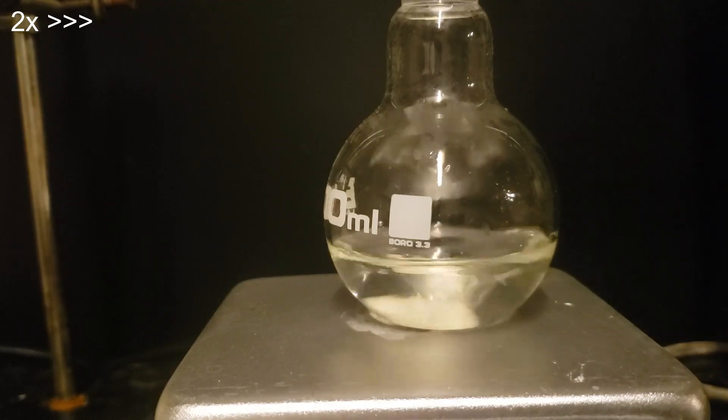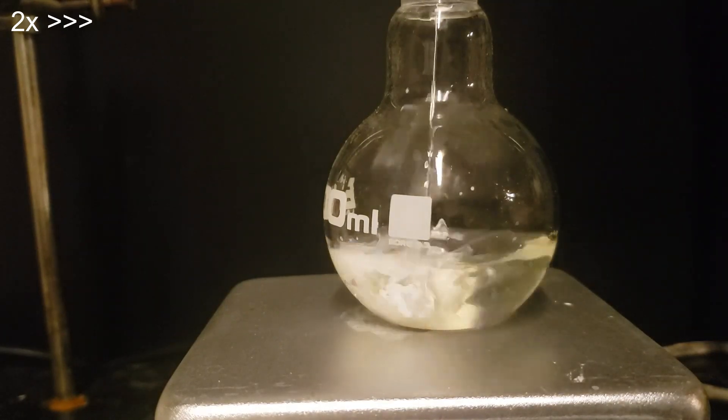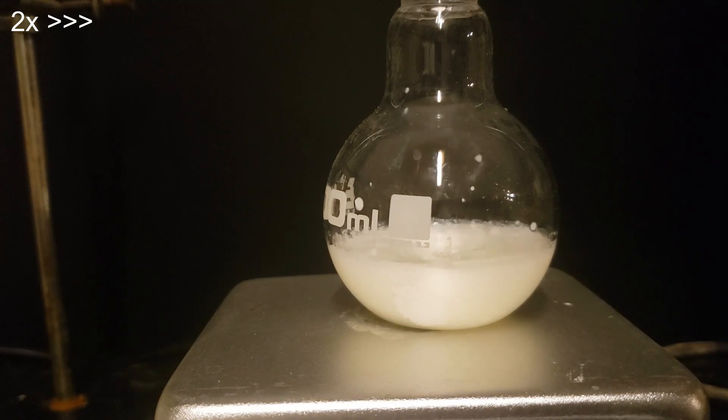The tetrabutyl ammonium bromide solution is pipetted in, forming a curdy white precipitate of tetrabutyl ammonium octamolybdate.